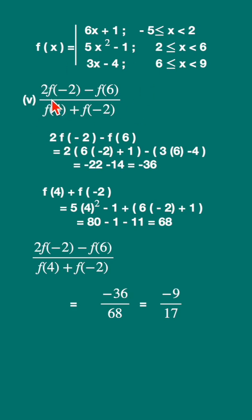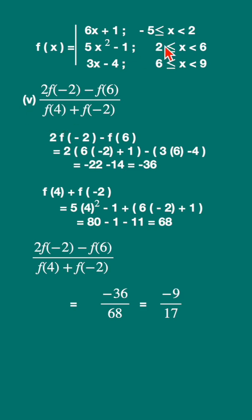For the fifth expression, find f(-2), f(6), and f(4). f(-2): x = -2 is in [-5, 2), use f(x) = 6x + 1. f(6): use f(x) = 3x - 4. Find the numerator — you get -36. f(4) is in [2, 6), use 5x² - 1, and f(-2) uses 6x + 1. Use those values and simplify to get the answer.